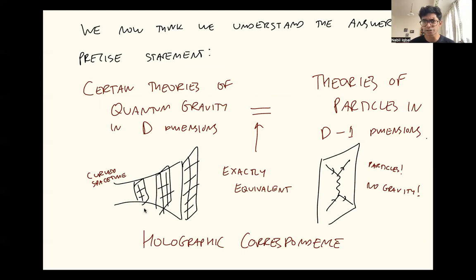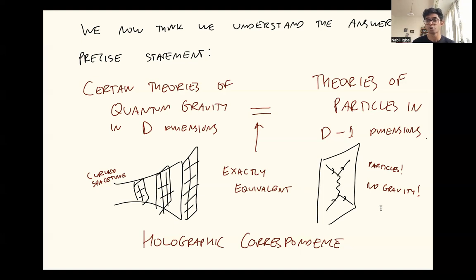Let me just say that again because it's so bizarre. Certain theories of quantum gravity — in other words, curved spacetimes that are fluctuating quantum mechanically — are exactly the same as ordinary theories of particles with no gravity at all, just particles bouncing around, but in one lower number of dimensions.